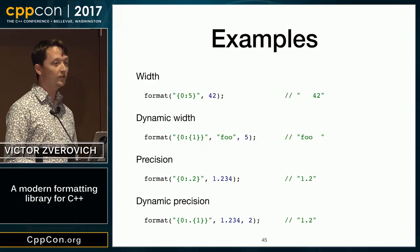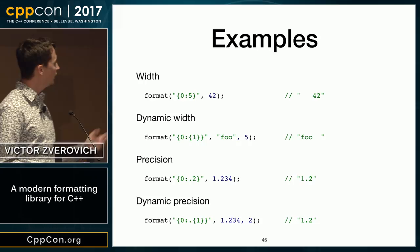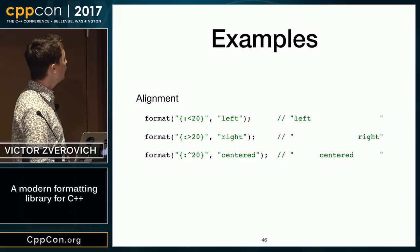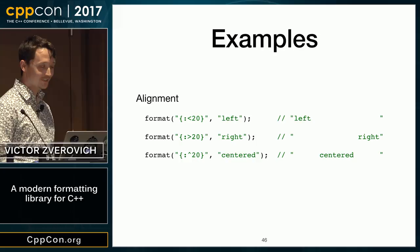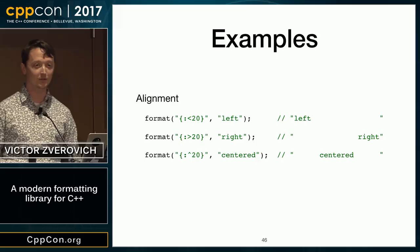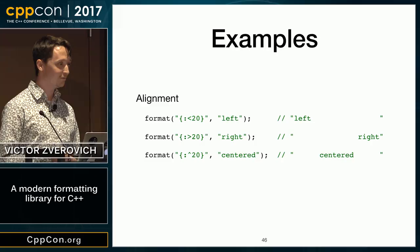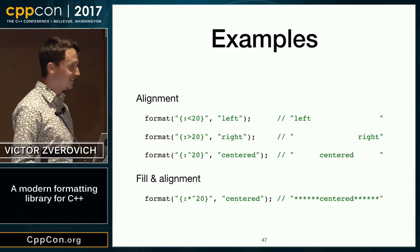Similarly, you can have precision specified in the format string or dynamically — after the point you specify the width, either literally or by referring to an argument. You can also use three types of alignment: left, right, and center. Center alignment is an improvement compared to printf, which doesn't have it. And you can have fill-end alignment, which is even more useful — you can do some kind of ASCII art or whatever.